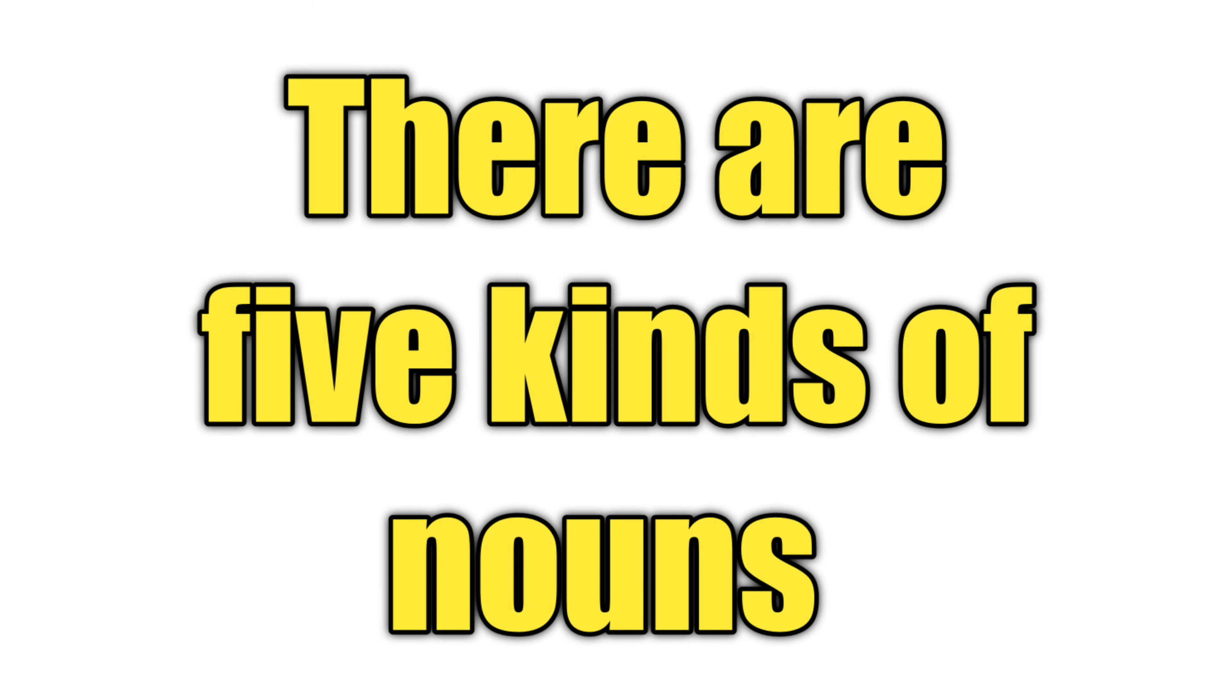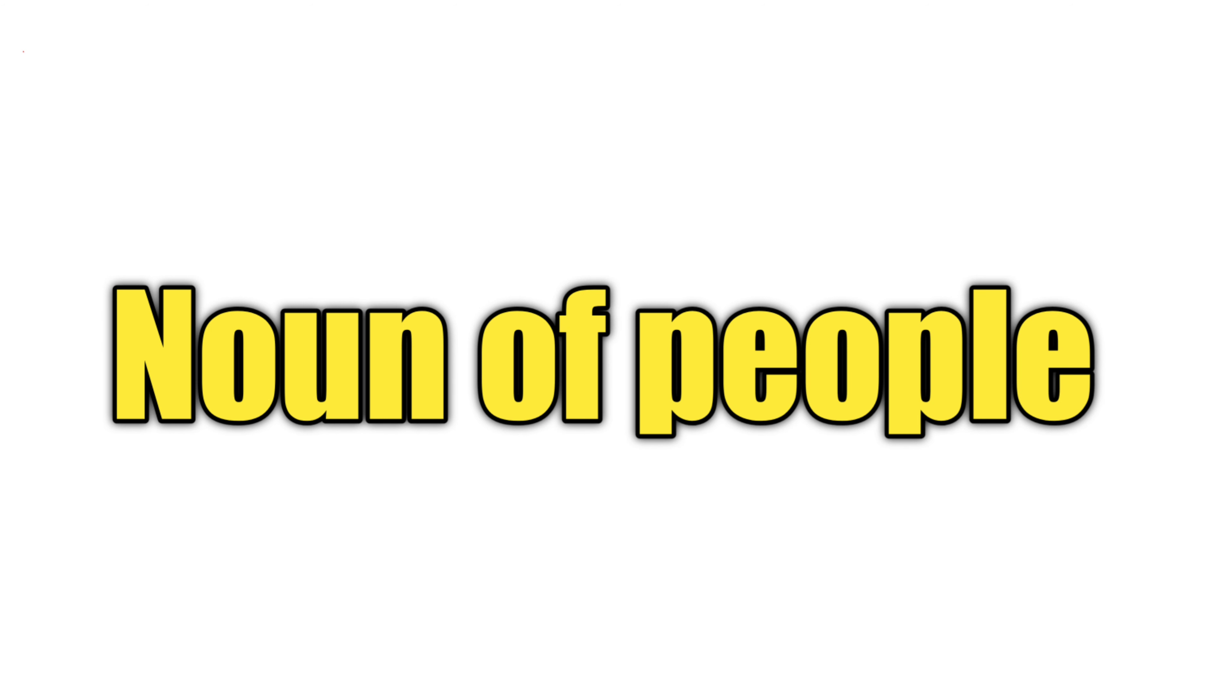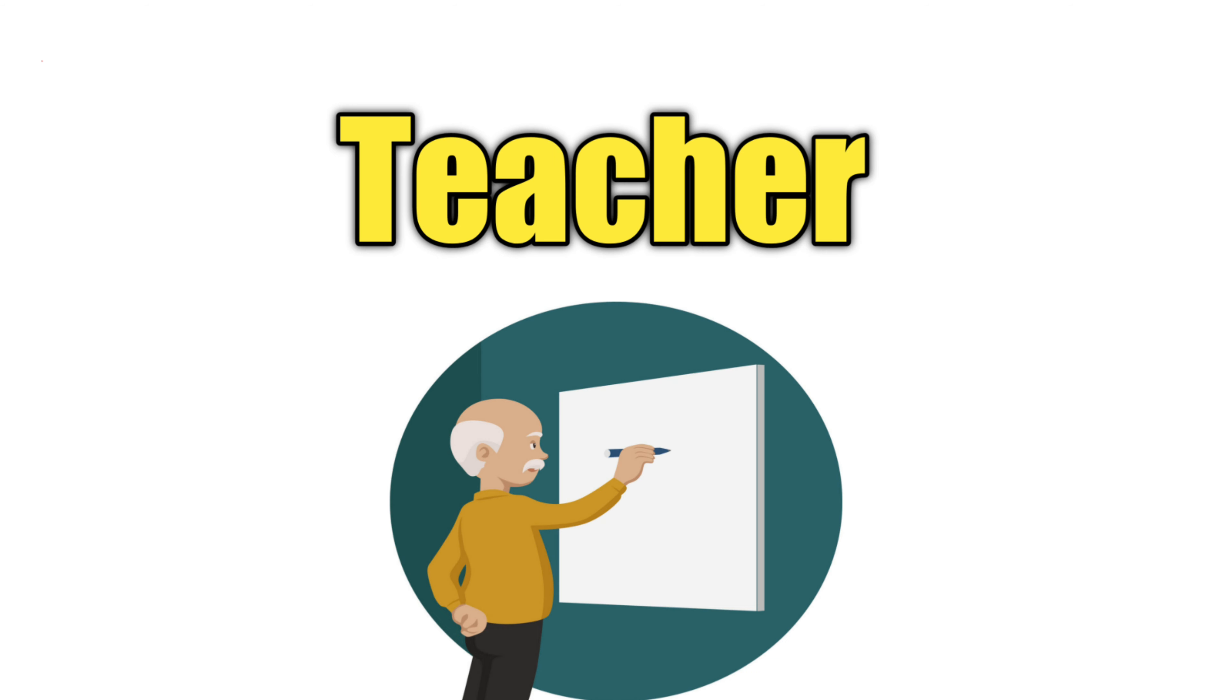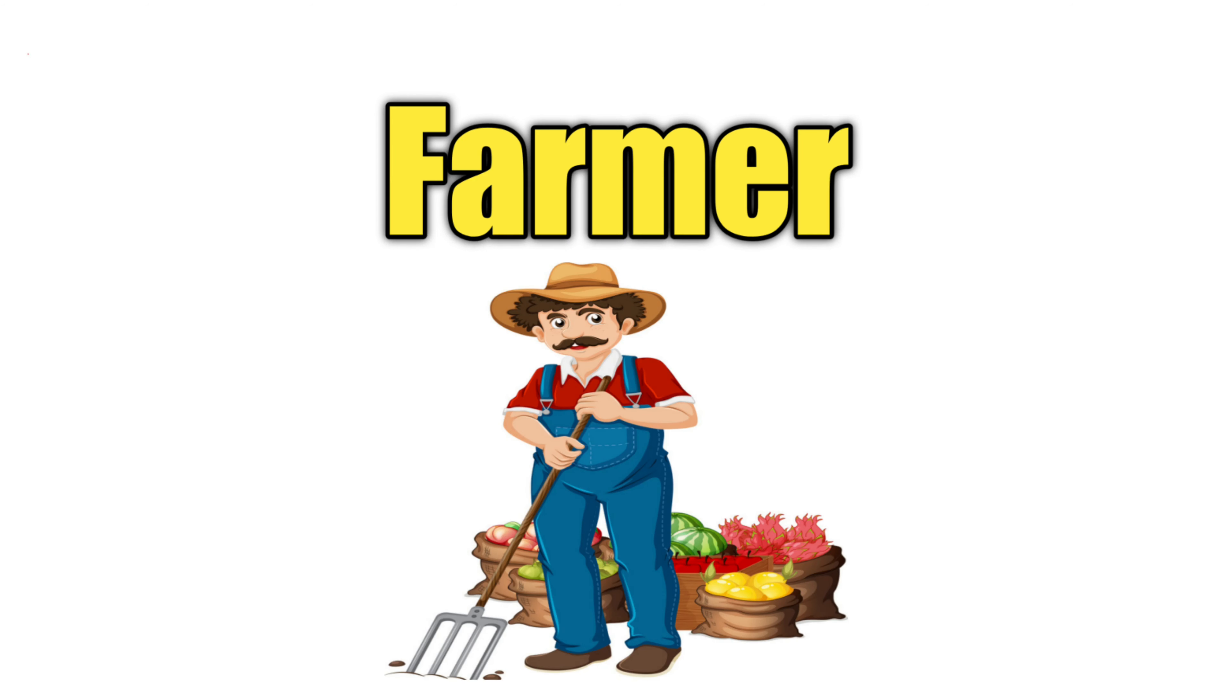There are five kinds of nouns. First, noun of people - for example: teacher, doctor, farmer.